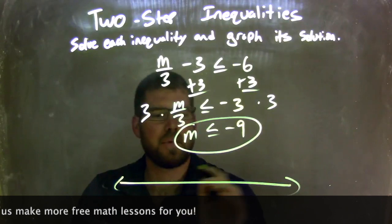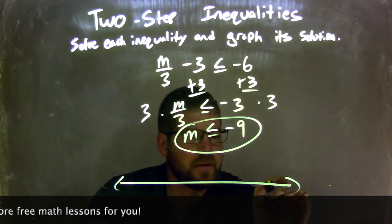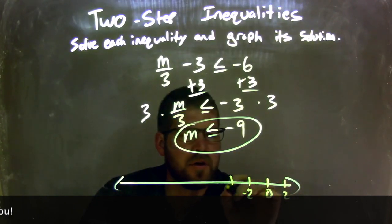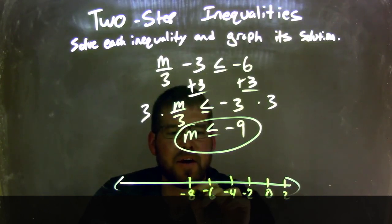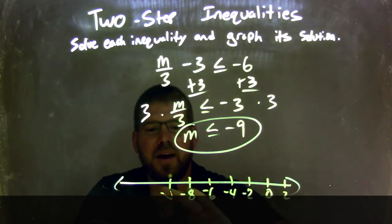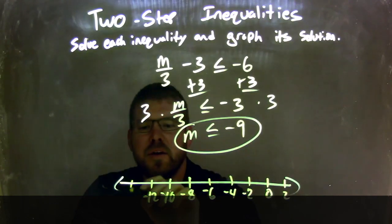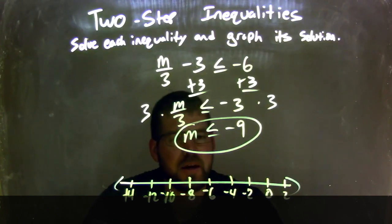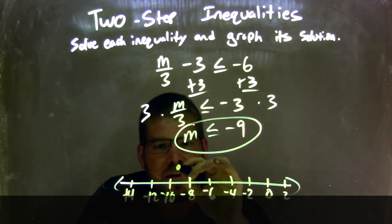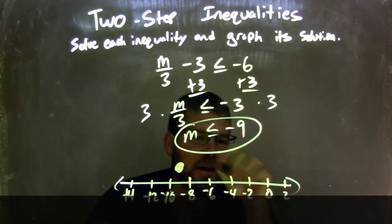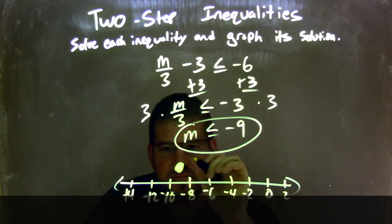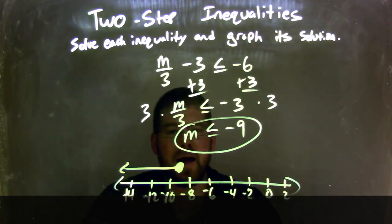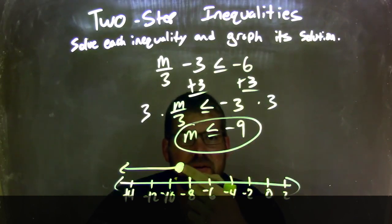Now I need to graph it. Let's go by 2s: 0, negative 2, negative 4, negative 6, negative 8, negative 9, negative 10, negative 12, negative 14. M is less than or equal to negative 9. Since it's equal to, it's a closed circle. Negative 9 is between negative 10 and negative 8, so we place it between them — sometimes the number line won't have the exact number, so we estimate. Since M is less than that, I put my arrow to the left. The graph matches M is less than or equal to negative 9.